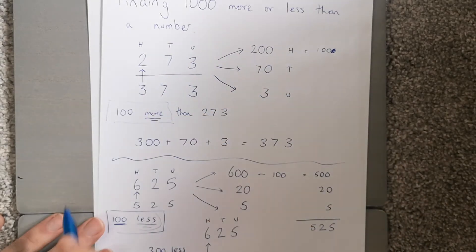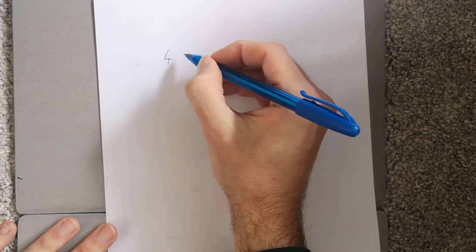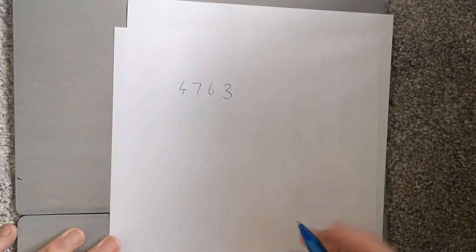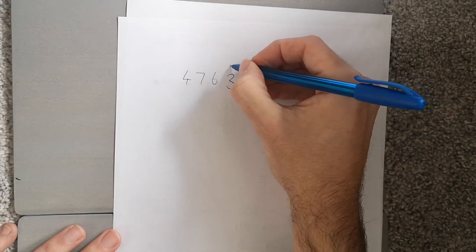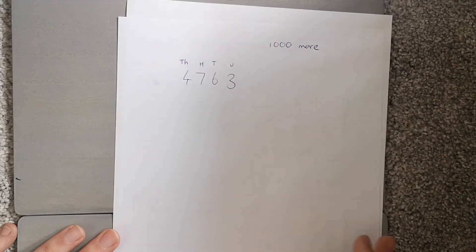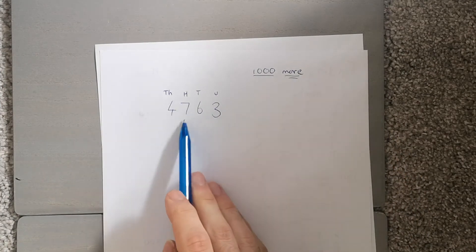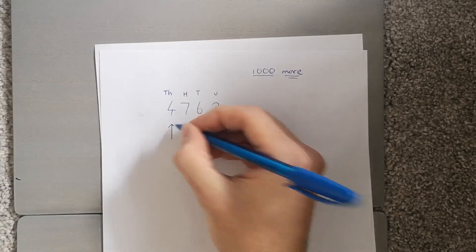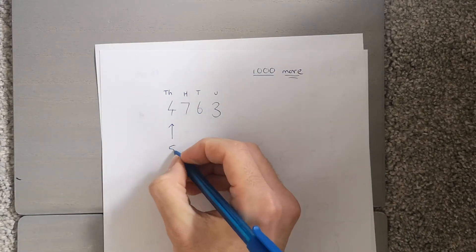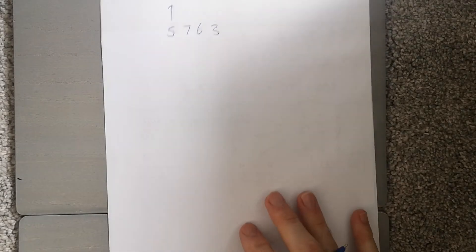Now let's look at thousands. If I've got 4763 and I want to find a thousand more, I look at my columns: units, tens, hundreds, and thousands. Because I'm doing a thousand more, I'm looking at the thousands column. I'm only going up one thousand, so that digit goes up by one — everything else stays the same.